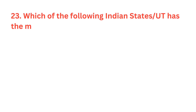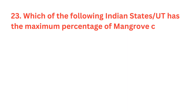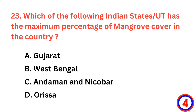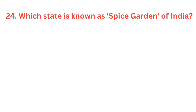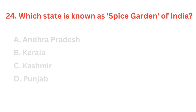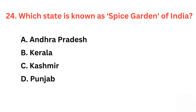Which of the following Indian states or UTs has the maximum percentage of mangrove cover in the country? The right answer is option B, West Bengal. Which state is known as the Spice Garden of India? The correct answer is option B, Kerala.